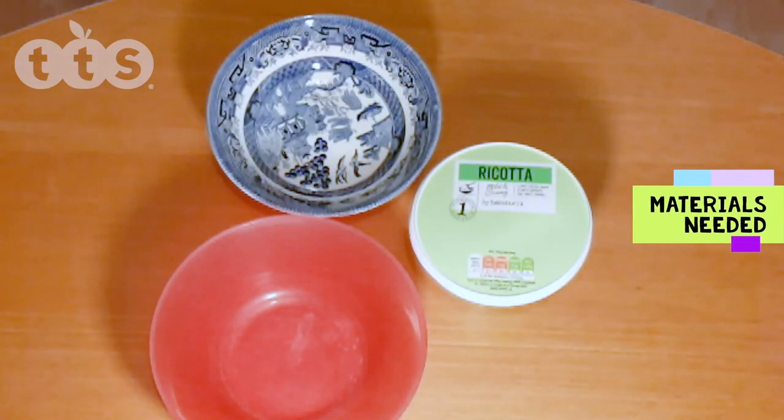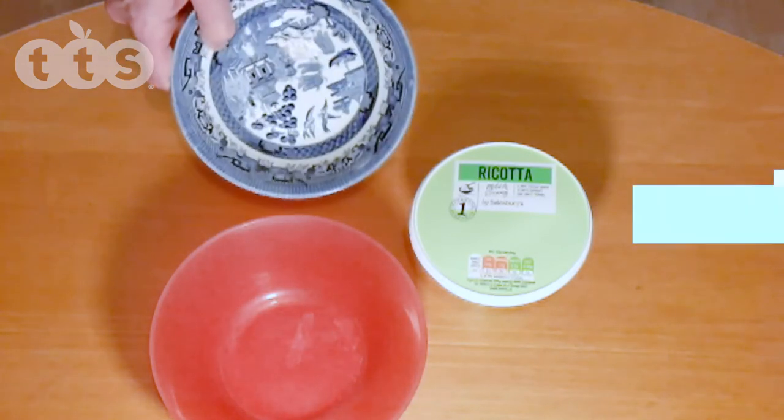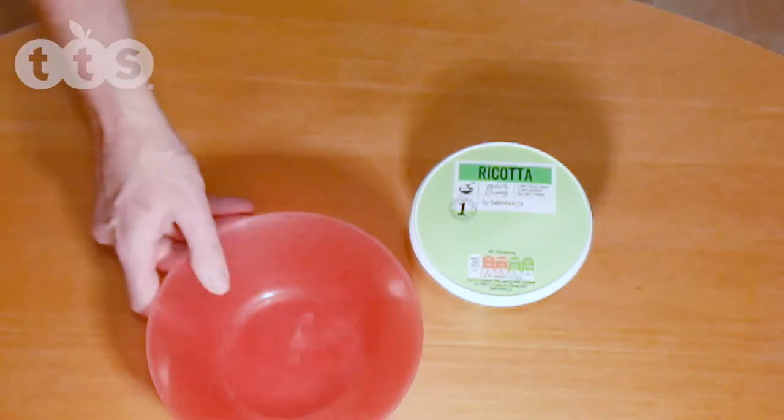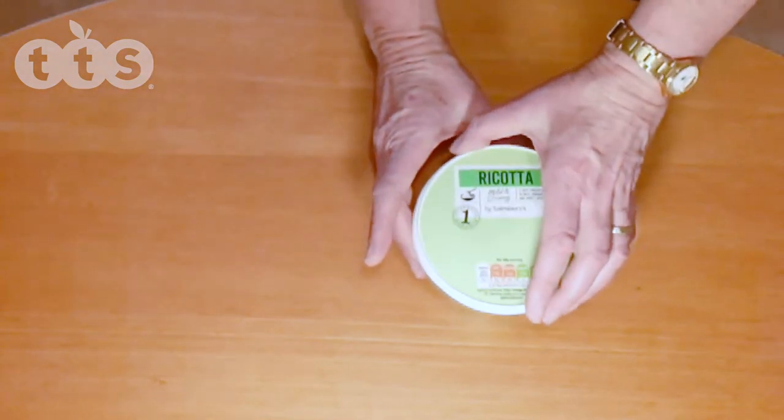This is what you'll need, a bowl or pot. I've got some examples here. This is china, this is plastic and this is a ricotta pot.